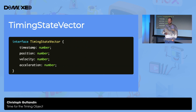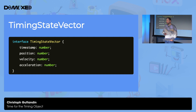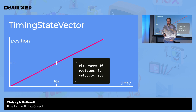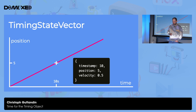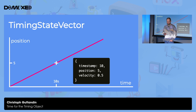The core piece of the spec is something called a timing state vector. It's basically a JavaScript object with four properties: a timestamp, which is the point in time when this vector was created; a position, which is the position at that point in time; and then a velocity and an acceleration to expand that point on the timeline. We can visualize this in a coordinate system with time on the x-axis and position on the y-axis. With a timestamp of 10, a position of 5, and a velocity of 0.5, you get a straight line that lets you derive any position at any other point in time. You can also define an acceleration to get a curve, but that's totally optional.